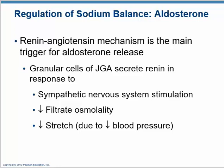The renin-angiotensin system is the main trigger for aldosterone release. Cells in the juxtaglomerular apparatus of the kidney secrete renin when the sympathetic nervous system fires (fight-or-flight), when osmolarity of the filtrate drops, or when blood pressure is too low (reduced stretch). Renin triggers angiotensin, which causes aldosterone release, increasing sodium reabsorption, raising osmolarity, increasing blood volume, and raising blood pressure — useful in fight-or-flight.